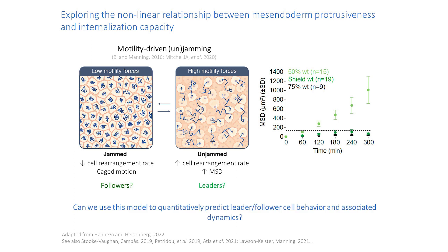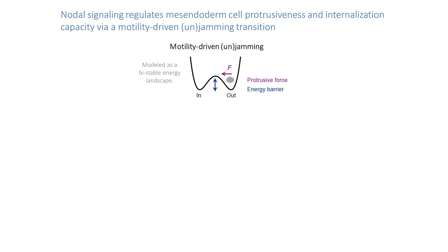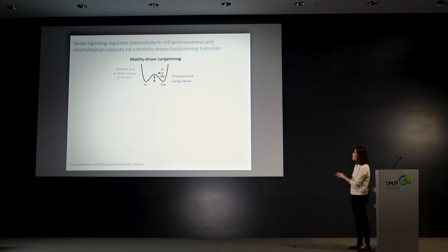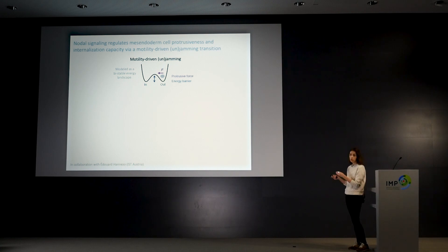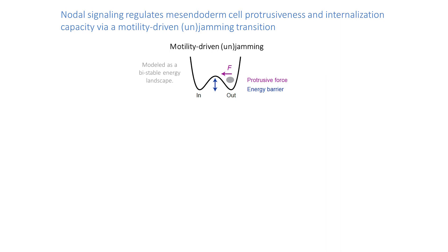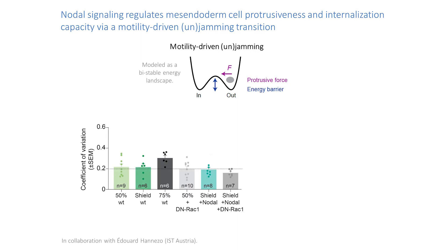Can we go further and use this analogy to predict what happens across all our different experiments more quantitatively? For that we teamed up with Edoardo Anenzo, a theoretical physicist at IST Austria, who modeled the process of motility-driven unjamming as an energy landscape with two stable states: outside or inside. To change state, the magnitude of your protrusive forces needs to be high enough to go over the energy barrier. We integrated the stochasticity observed in the protrusions — around 20 percent — across all conditions.